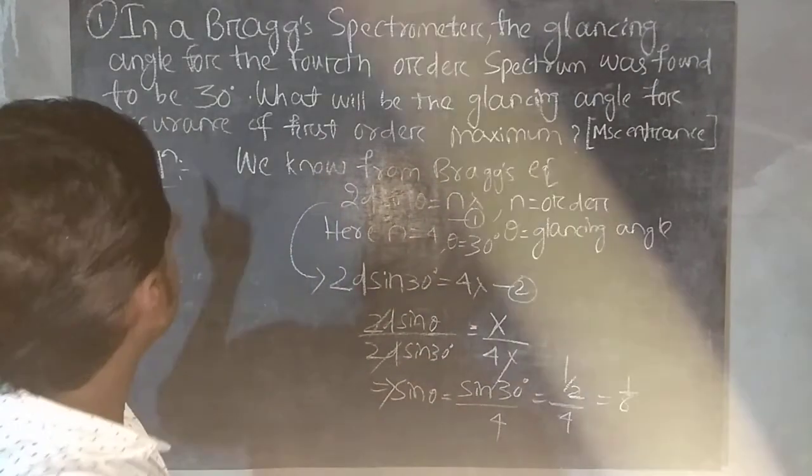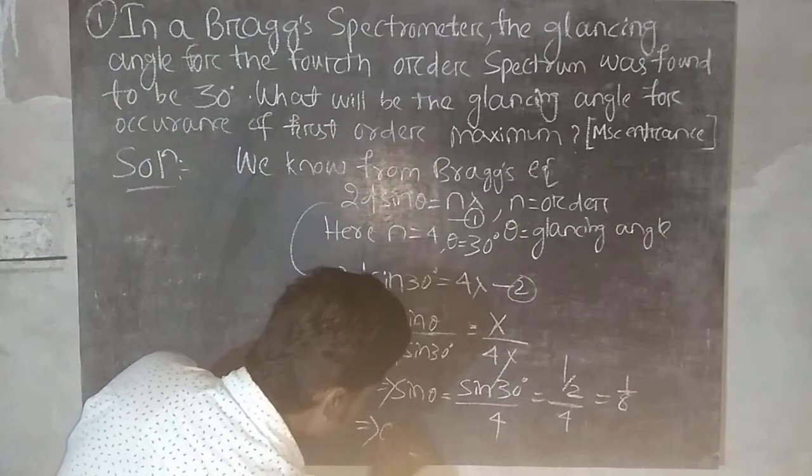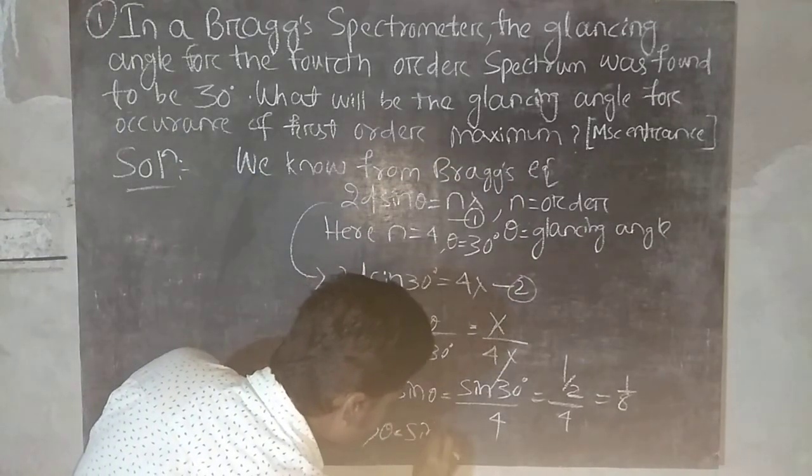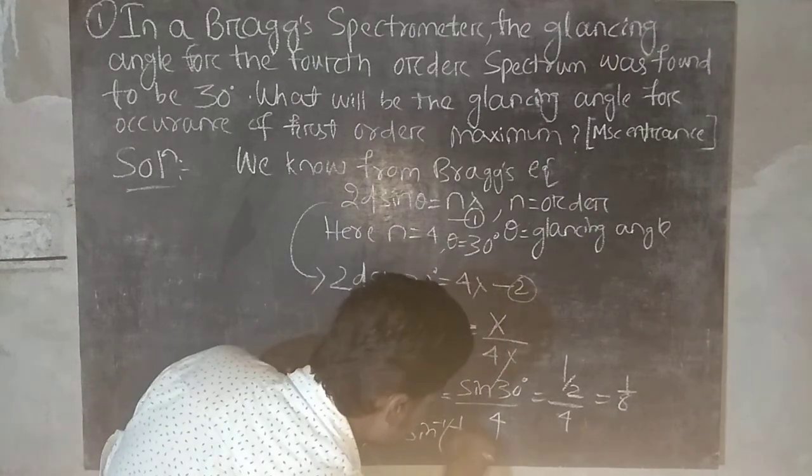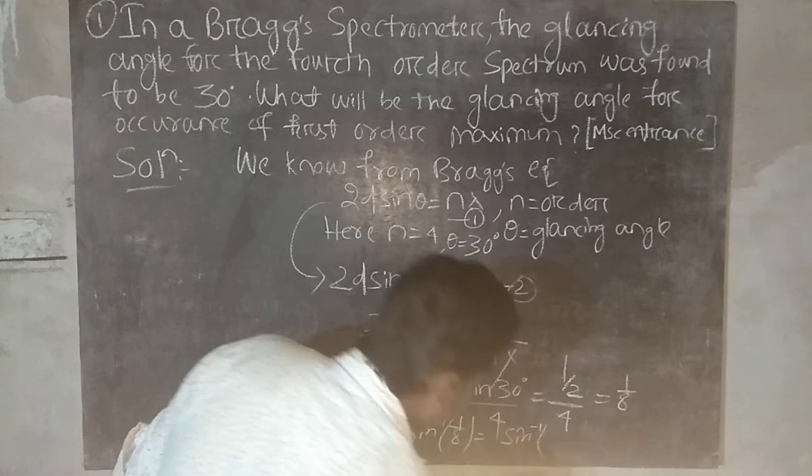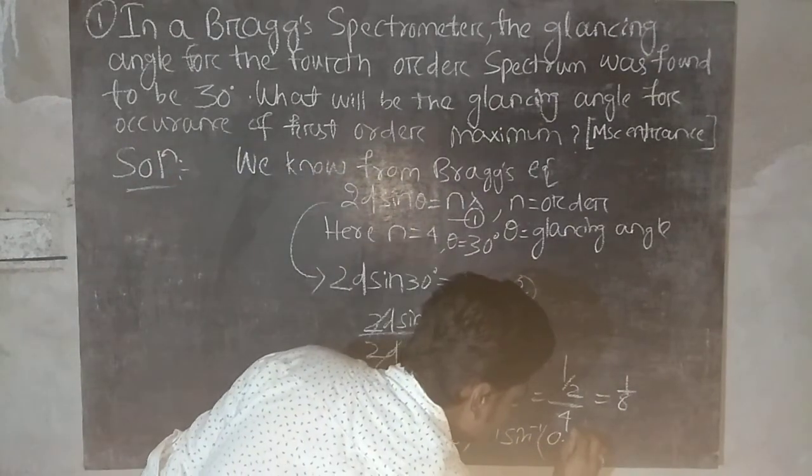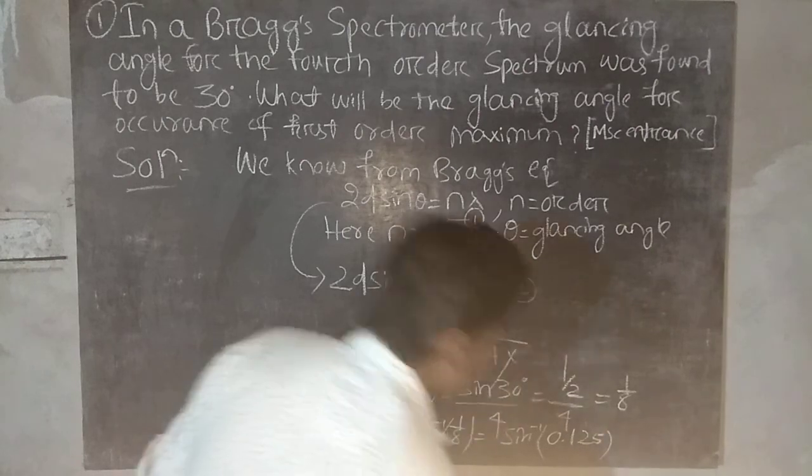So the question asked what is the glancing angle. So we have theta equal to sin inverse of 1 by 8, equal to sin inverse of 0.125. That is the answer.